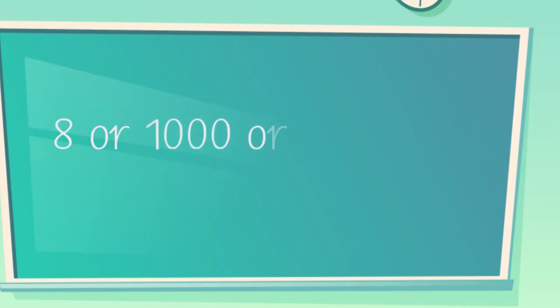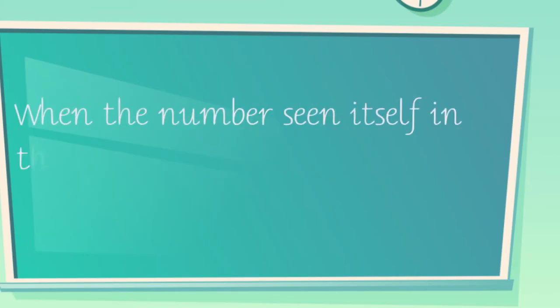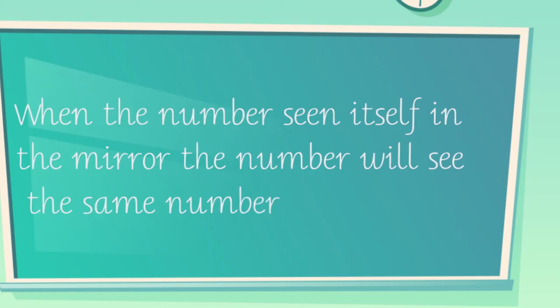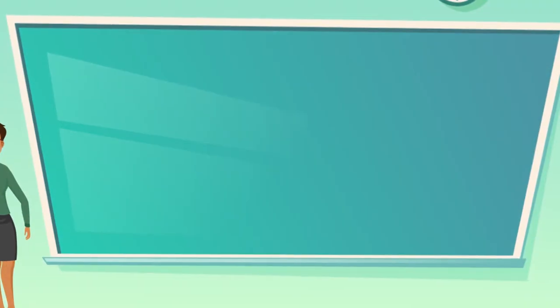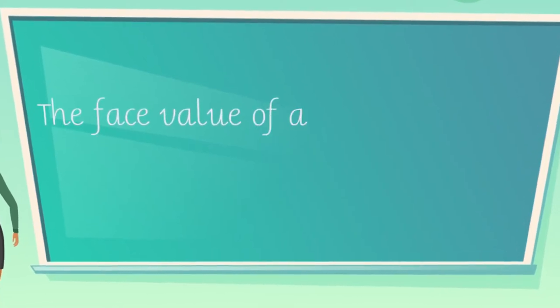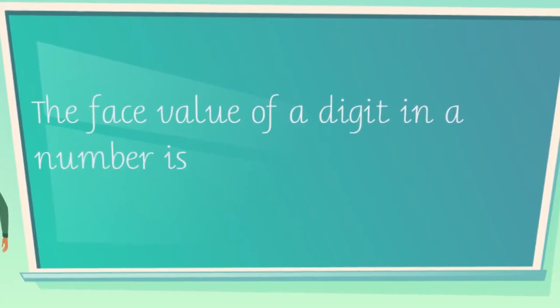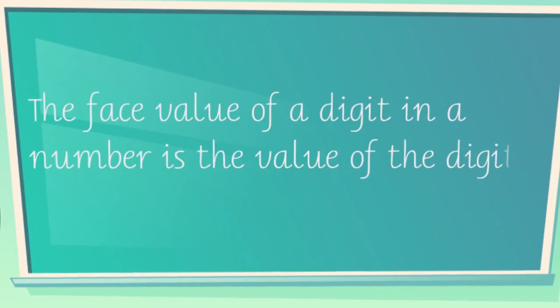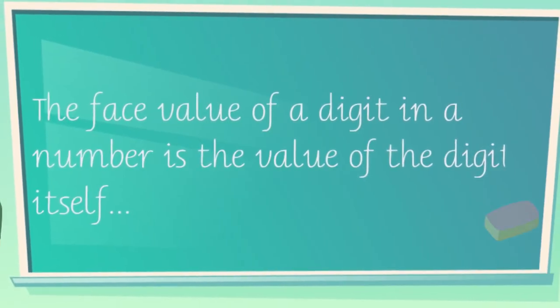When the number is seeing itself into the mirror, the number will see the same number, right? So the face value will be the same number. Let me define this in a mathematical way: the face value of a digit in a number is the value of the digit itself.